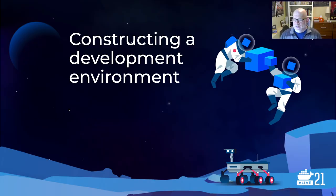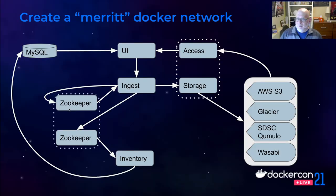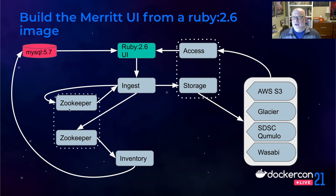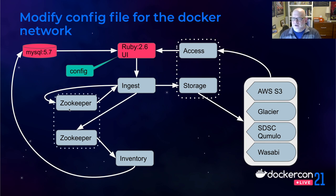How did I build this development environment? The first thing I did was create a Docker Compose file and create a Merritt Docker network inside it. For the inventory database, we built a Docker image using a MySQL 5.7 Docker image and loaded the Merritt schema into that image on initialization. For our user interface, we built a Docker image using a Ruby 2.6 Docker image. We also overlaid several configuration files for the user interface to help that microservice locate other microservices within the Docker network.